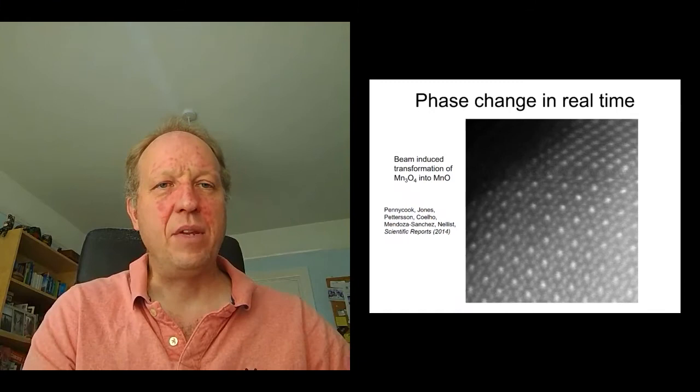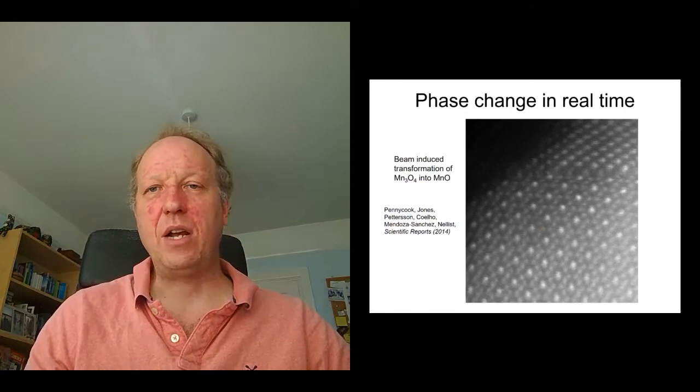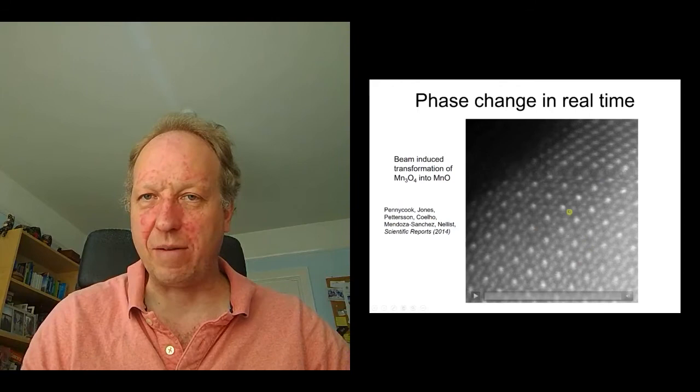Now what happens in this material, when we started looking at it in the electron microscope, the electron beam started damaging the material and it started transforming into MnO. So it's got a different stoichiometry, different chemistry, and the structure changes. This is a more complicated structure called a spinel crystallographic structure. This one's a bit simpler, and it's actually the same as rock salt, same as sodium chloride.